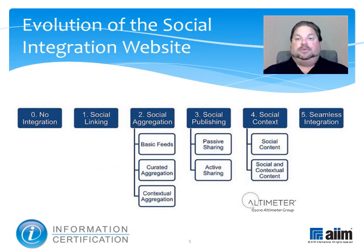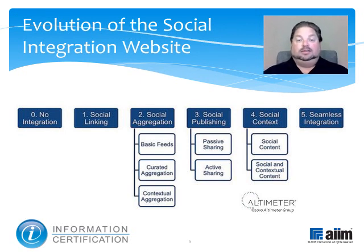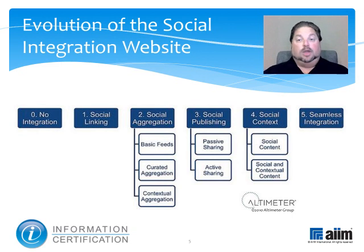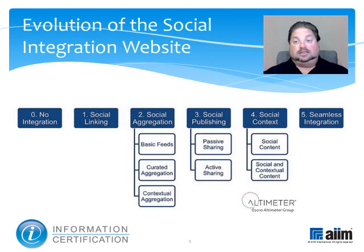The first baby step on this road was taken via simple linking, but we've moved so far beyond that both technically and culturally that it's difficult to recall how exciting it was to be able to surf at all. This graphic from Altimeter Group charts the path since then, presenting six major stages of website social enablement, beginning with no integration at all, ending with a seamless integration that features no tangible differentiation between your site and social channels.